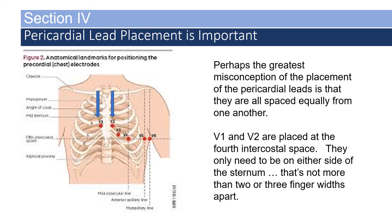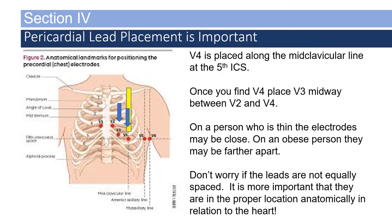Precordial lead placement is very important. The greatest misconception is that they are all placed and spaced equally from one another — that's not true; it depends on the diameter of the patient's chest. V1 and V2 are placed at the fourth intercostal space on either side of the sternum, no more than two or three finger-widths apart. After placing V1 and V2, find V4 along the mid-clavicular line at the fifth intercostal space, then place V3 midway between V2 and V4. On a thin person the electrodes may be close; on an obese patient, farther apart. Don't worry if leads are not equally spaced — it's more important that they are in the proper anatomical location relative to the heart.